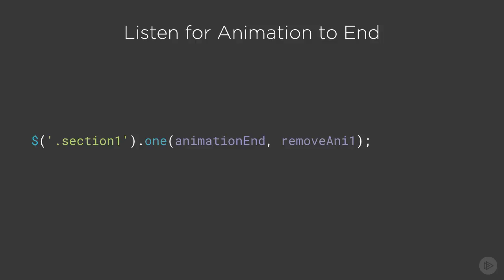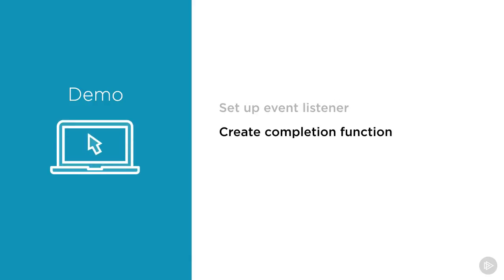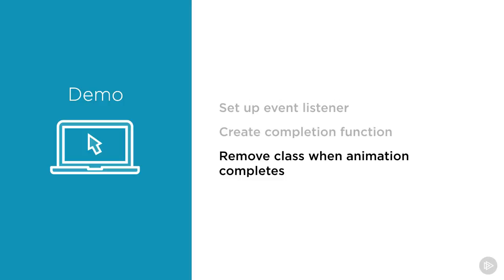We're going to run a function — you can name it whatever you want, so I'll call it 'removeAnyOne'. We're setting up this event listener to listen for the animation, then creating a completion function that will remove the class when the animation completes. So after the class is added, it's going to remove it. The toggle class logic says: if the class is on, remove it; if not, add it — but we'll handle removal via the animation complete listener.